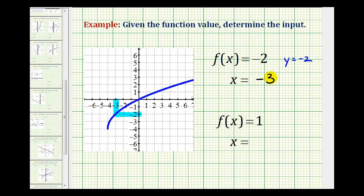So again, what we found is that f of negative three is equal to negative two. When the input is negative three, the function value, or the output, is negative two, which does correspond to the point negative three, negative two.